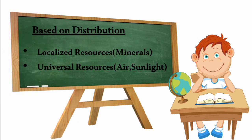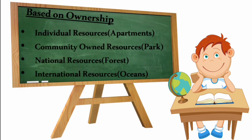Based on distribution, resources are classified as localized — present at a particular place, like minerals — or universal, present all over the world, like air and sunlight. Based on ownership, resources are classified as individual (e.g., apartments), community-owned (e.g., parks), national (e.g., forests) and international (e.g., oceans).